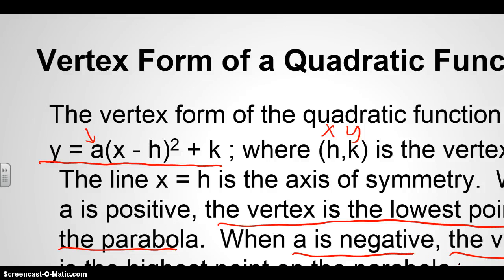And when a is negative, the vertex is the highest point on the parabola. And I'm going to show you an example of what this definition is talking about on this next slide. Please be aware, though, of this form here, the vertex form of a quadratic function, because you will need to know that form.